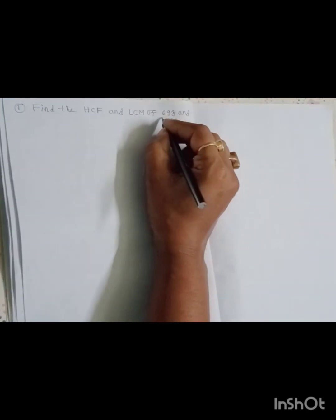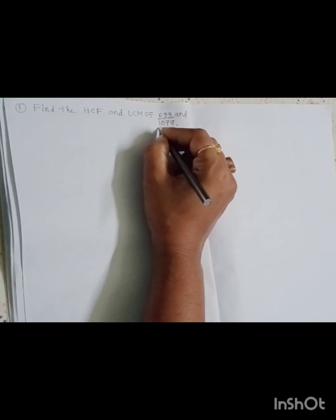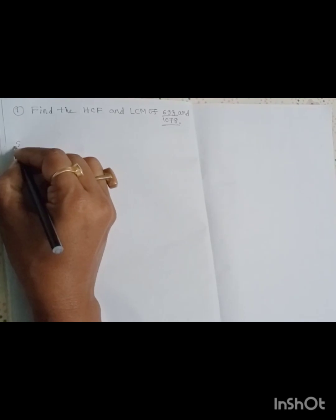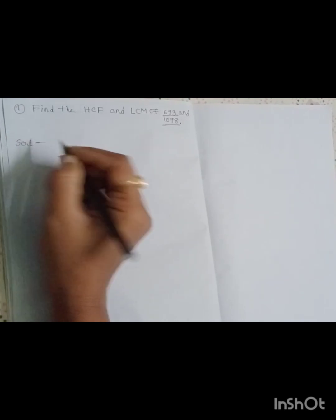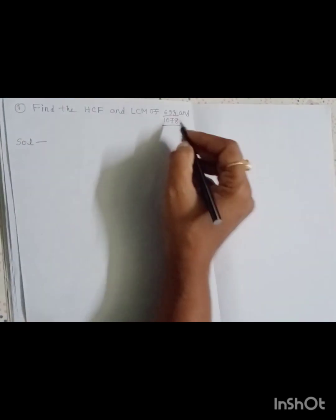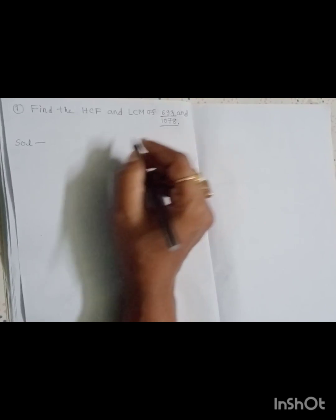Hello students. Suppose you are given a math problem: find the HCF and LCM of 693 and 1078. How will you find the HCF and LCM of these two numbers? First, we have to find the HCF using the long division method.